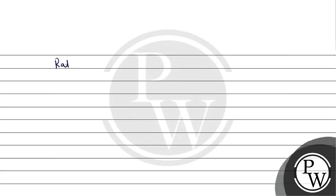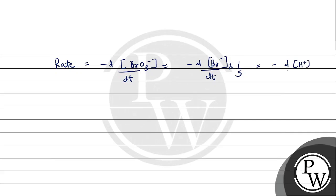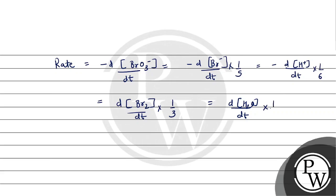Is reaction के लिए सबसे पहले हम rate of reaction लिखेंगे तो हमारे पास आएगा: minus d[BrO₃⁻]/dt = minus d[Br⁻]/dt × 1/5 = minus d[Br₂]/dt × 1/6, और ये equal है d[Br₂]/dt × 1/3 = d[H₂O]/dt × 1/3.